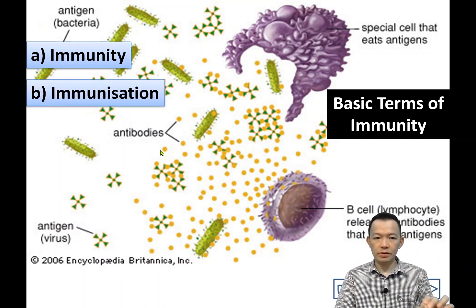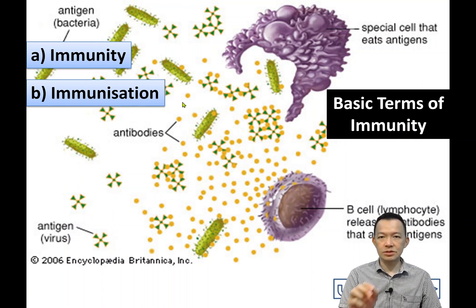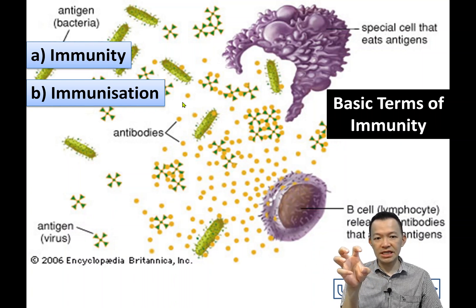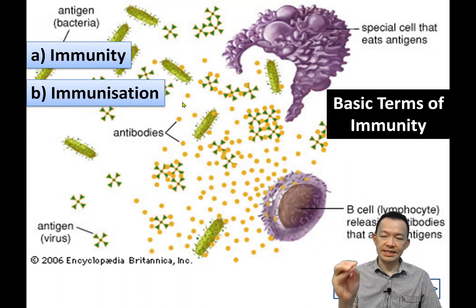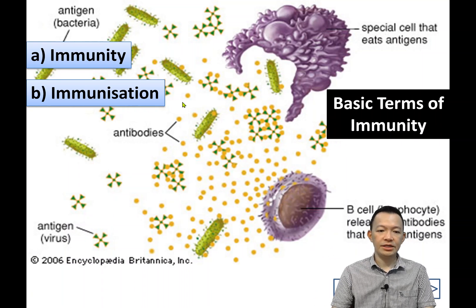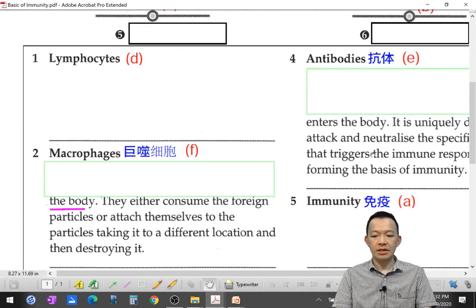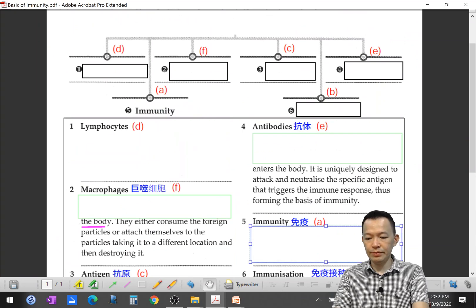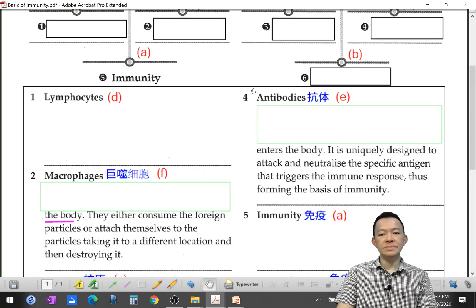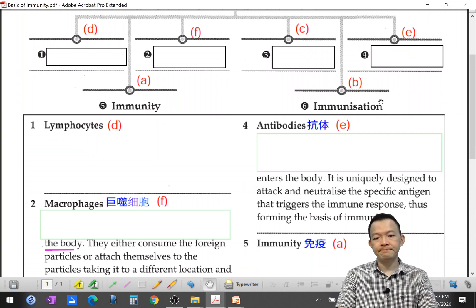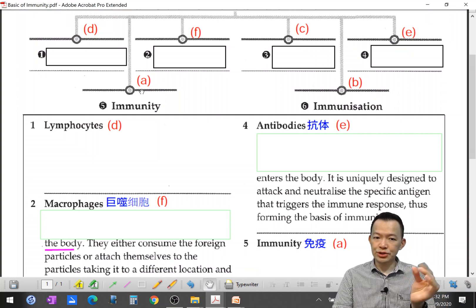Number two: what is meant by immunization? In Chinese we call it 免疫接种. This is a process — a process by which someone obtains immunity. The process of someone acquiring their immunity is called immunization. Copy slowly. The sentences are hard to follow exactly, but as long as you understand the meaning, that's fine.